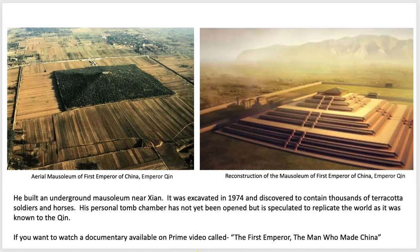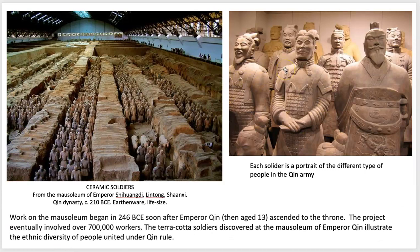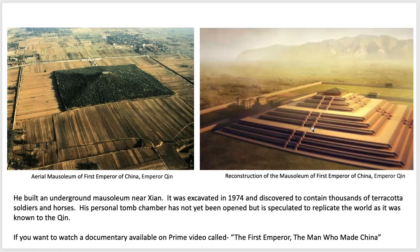This is roughly what the site looks like now — they haven't fully uncovered it for various reasons, partly because they're nervous about lacking modern technology to uncover it without destroying it. When they first opened parts of the complex, the terracotta soldiers were painted, but as soon as air and oxidization occurred the paint would fade away. They're working on ways to excavate these sites without destroying them. There's an interesting documentary on Amazon Prime called 'The First Emperor: The Man Who Made China.'